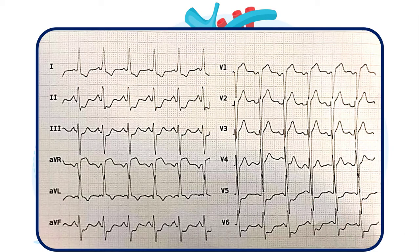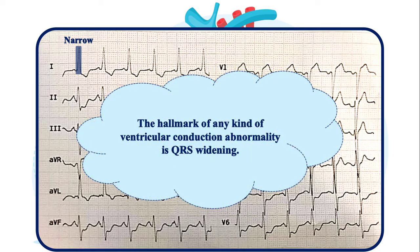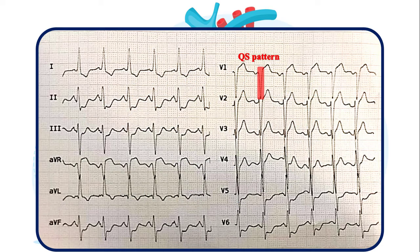Here is one more example. Is it LBBB or not? The QRS interval is about 2 small boxes, so the complexes are narrow and no intraventricular conduction abnormality is present. Note that the hallmark of any kind of ventricular conduction abnormality is QRS widening. Therefore, an isolated QS pattern in V1 does not suffice to make the diagnosis of LBBB. Meanwhile, widespread ST-T wave changes are possibly due to underlying ischemia.